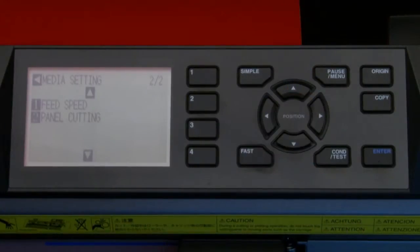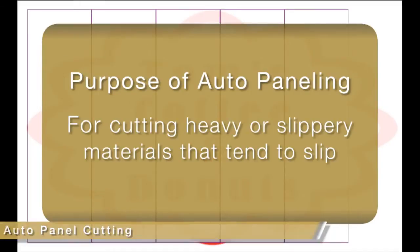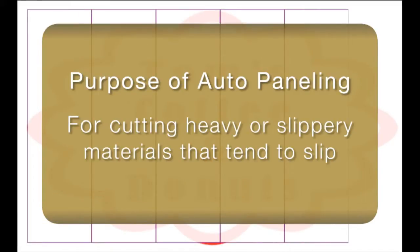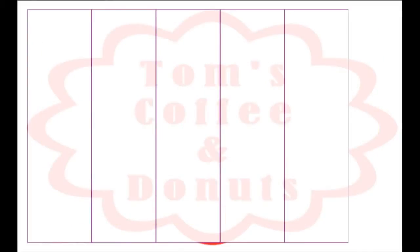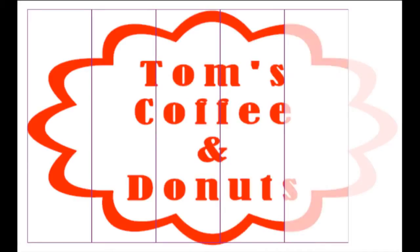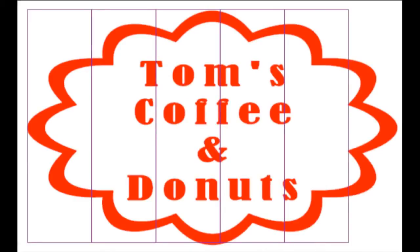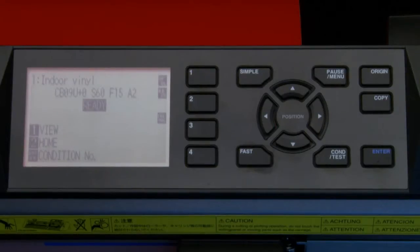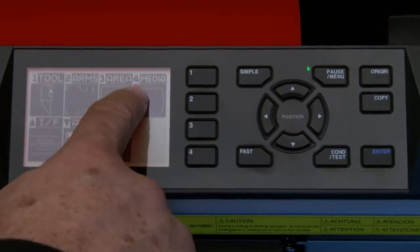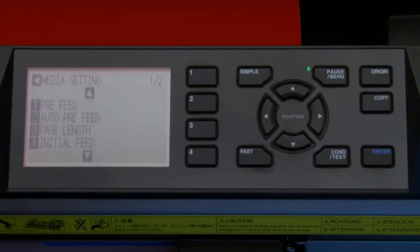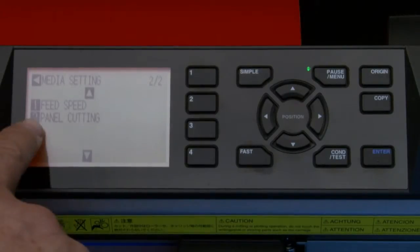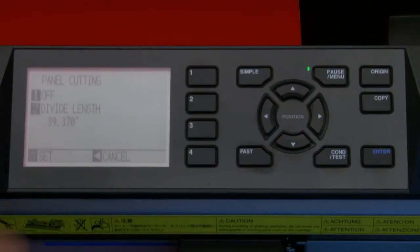Another function to use for obtaining good tracking is auto paneling. Picture this scenario: you are cutting a stiffer media that tends to slip, causing the media to skew as it moves back and forth — some reflective materials can be like this. Auto paneling is ideal for situations like this. It can panel a job in sections; in other words, it will cut the job one section at a time. This reduces the amount of movement during the cutting operation and thus keeps the media on track. To enable auto paneling, press the Pause/Menu key, press the 4 key for media, press the up arrow key to switch to the second page of options, and then press the 2 key for panel cutting.